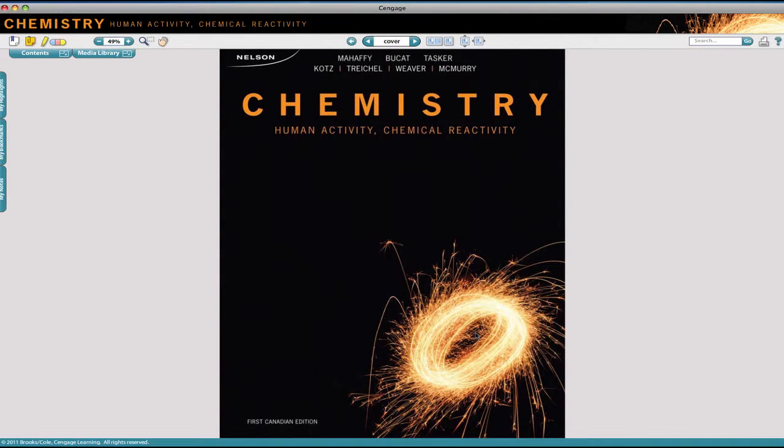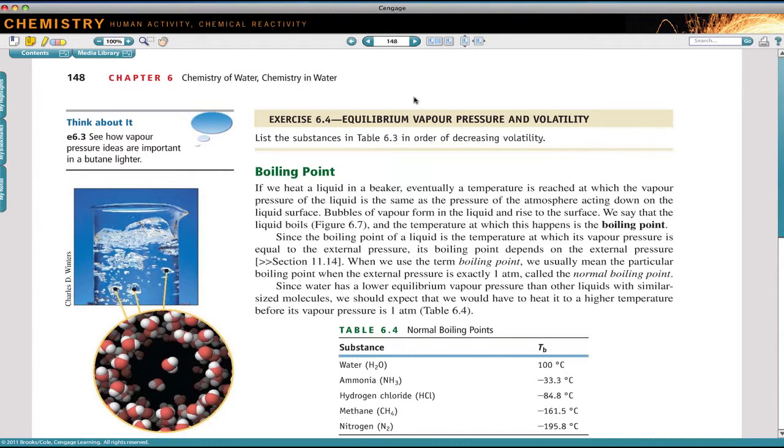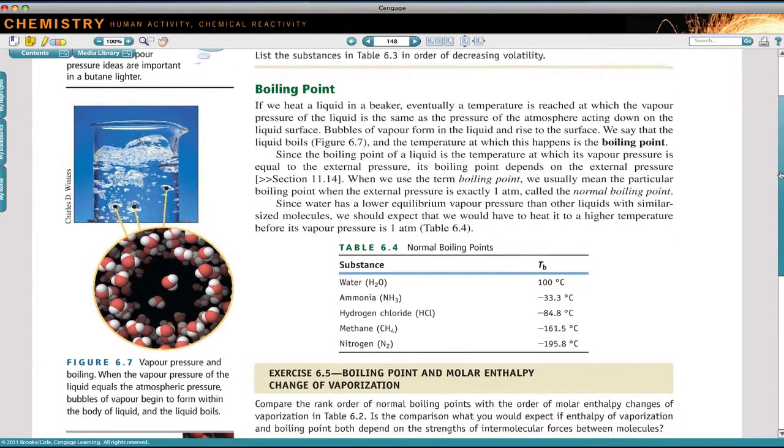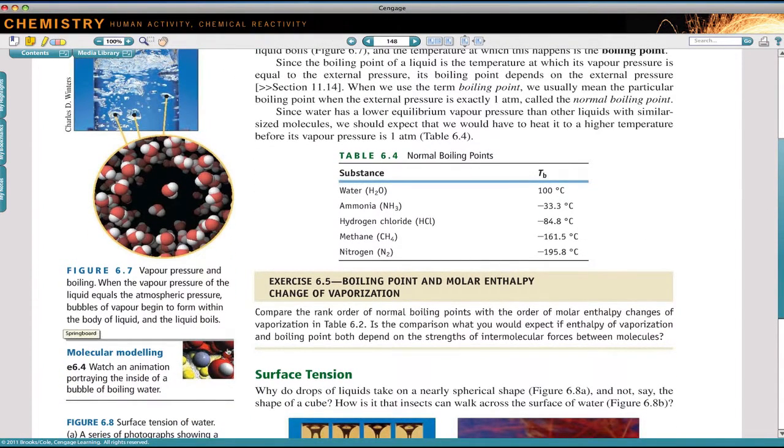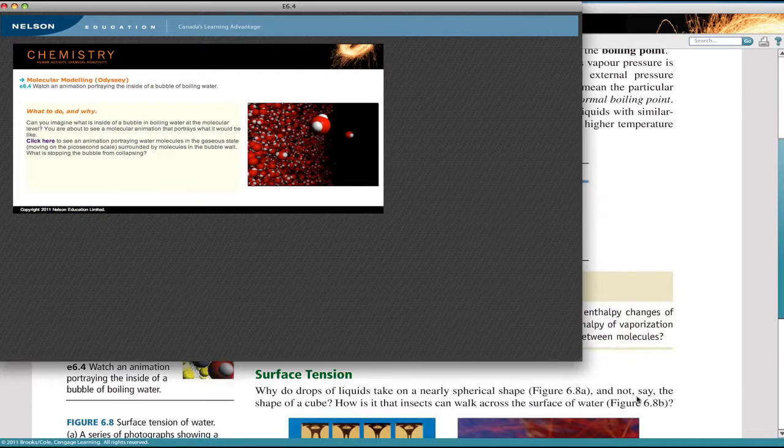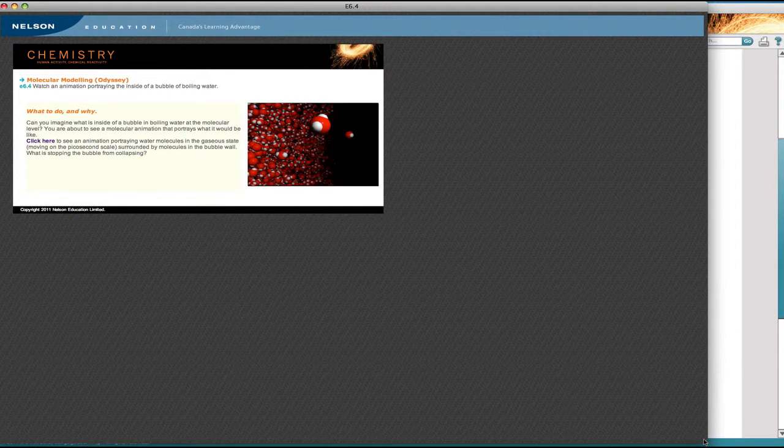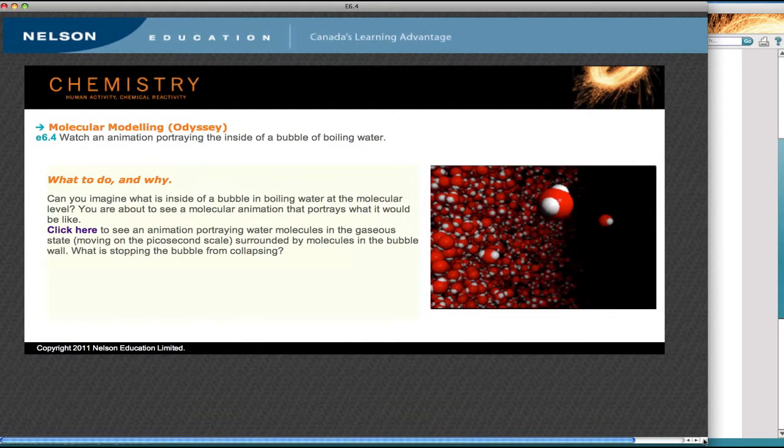You can jump to a page in the eBook very easily. You just have to go up to the page counter at the top here, type in the page number, hit return, and in this case we've gone to the section dealing with boiling point and the unusual boiling point of water. There is a margin icon to eResource e6.4 that if we click on, we open what I call a springboard, which basically sets the scene and asks questions to focus the students' attention on what they're about to see.